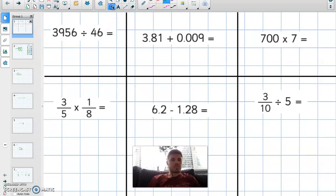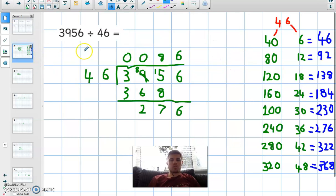Afternoon guys, hope you've had a good day. I'm going to go through the answers for the six questions I set you this morning. So question number one: 3956 divided by 46. Now I've used the bus stop method and I've put 3956 inside the bus stop and 46 on the outside.